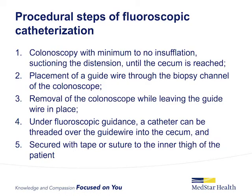We thought it may be helpful to describe the procedural steps of fluoroscopic catheterization, as described by Herig et al. and Mesmer et al. Procedural steps include: first, colonoscopy with minimal to no insufflation, suctioning the distension until the cecum is reached. Number two, placement of a guide wire through the biopsy channel of the colonoscope. Number three, removal of the colonoscope while leaving the guide wire in place. Number four, under fluoroscopic guidance, a catheter is threaded over the guide wire into the cecum. And number five, it is secured with tape or suture to the inner thigh of the patient.